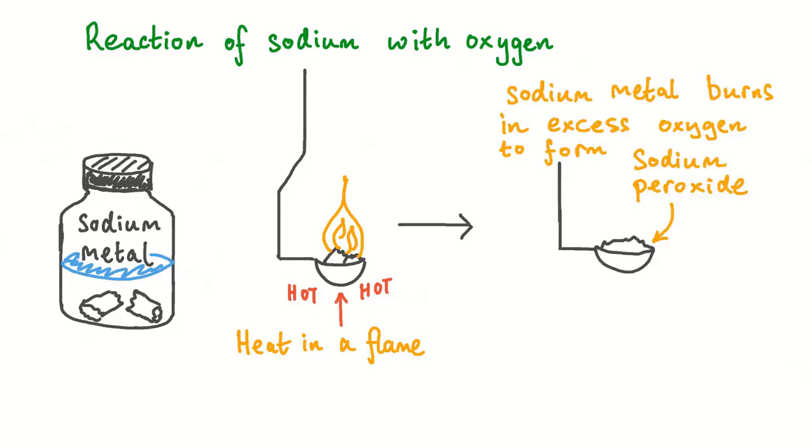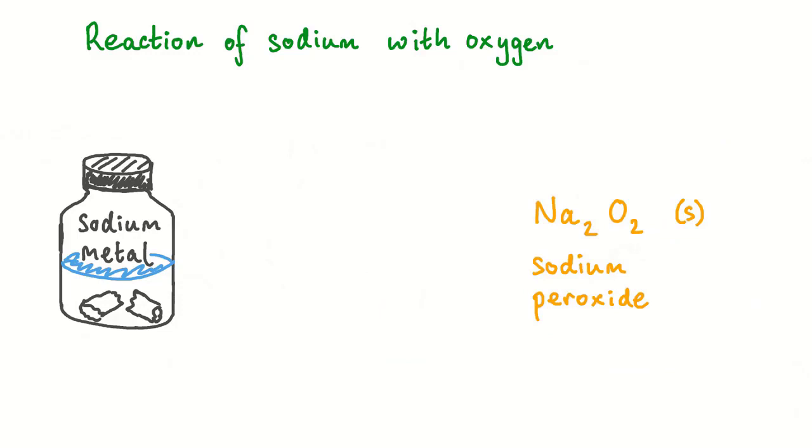When sodium burns in excess oxygen, sodium peroxide is the main product that's formed. Unusually for a group 1 metal compound, sodium peroxide has a faint yellowish color. Sodium peroxide has the chemical formula Na2O2. We therefore need 2 moles of sodium atoms to react with a mole of oxygen molecules to make a mole of sodium peroxide.